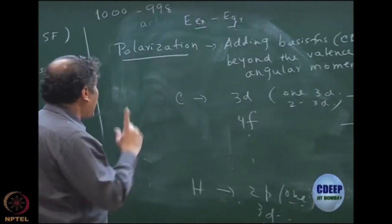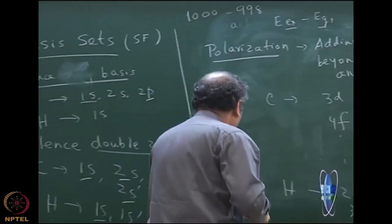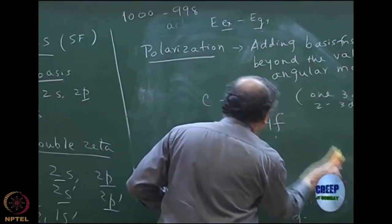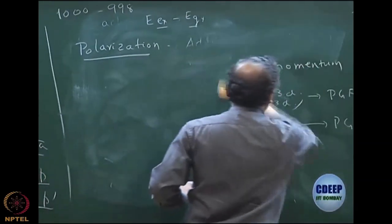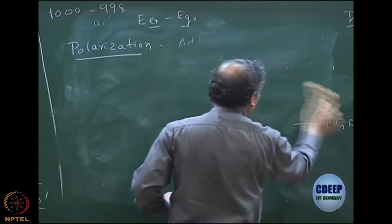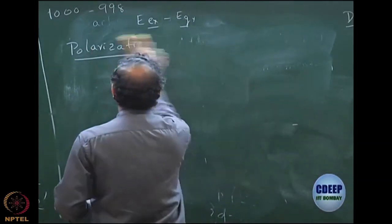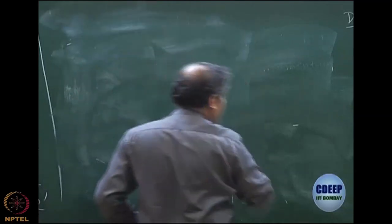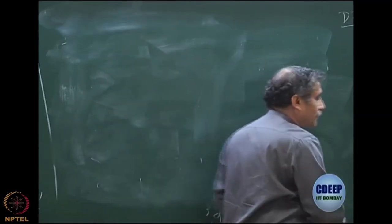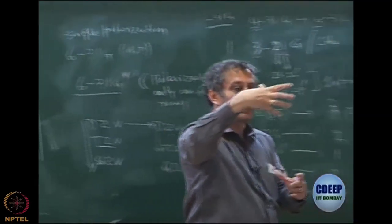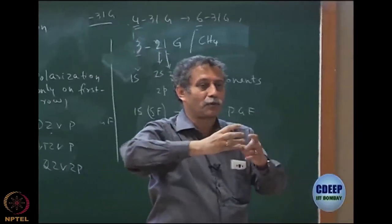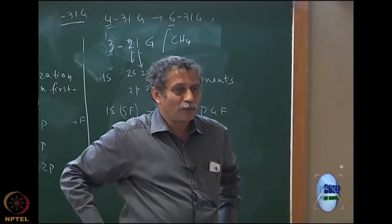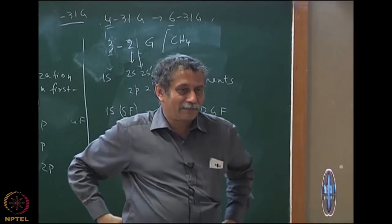The second type, also very important to mention, is apart from polarization — polarization is essentially going beyond one angular momentum, which polarizes the electron density. That is how the word polarization arose.